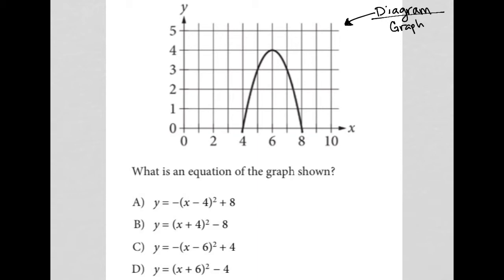Whenever I have a graph, I like to look at what I know about it. I have an x-axis and a y-axis. It looks like I have some x-intercepts here at 4 and 8. It looks like this has a vertex here at the point (6, 4), so when x is 6, y is 4.